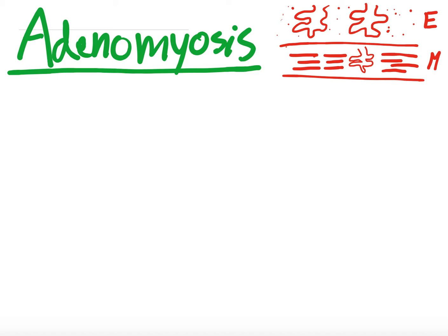Today we'll be talking about adenomyosis. This is one of the subset videos from the abnormal uterine bleeding video — that's an introductory video I can link above. This is part of that differential we discussed, using the PALM-COEIN mnemonic. P was endometrial polyp, and this one is the A — adenomyosis.